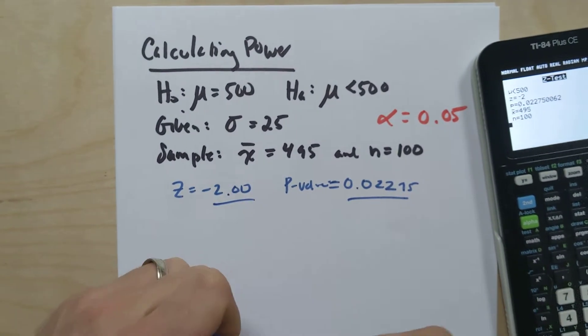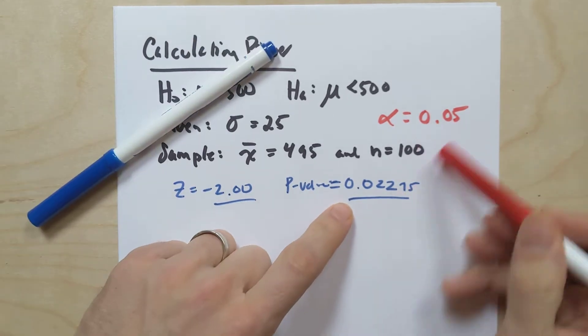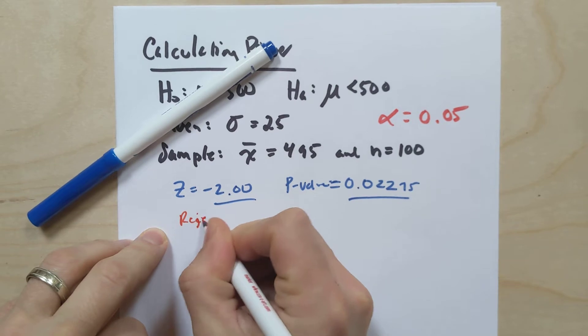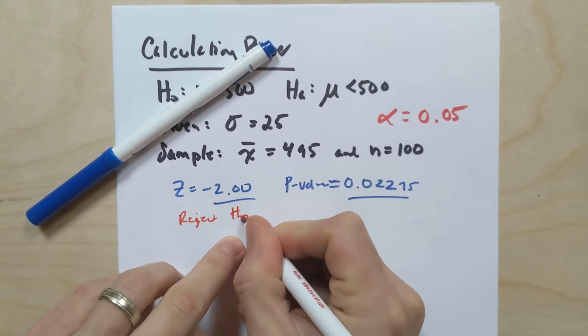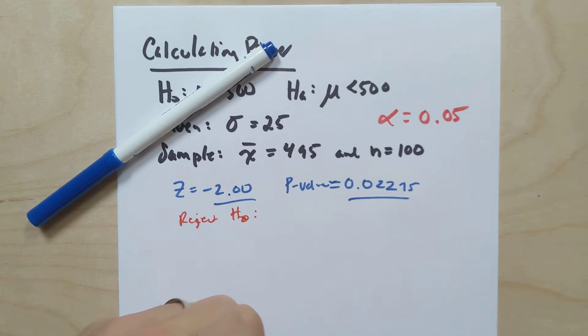So in this particular situation, we would absolutely reject the null hypothesis, right? We reject, reject the H₀, right? Why do we reject the H₀? Well, our p-value is less than our level of significance. Yay! So, okay.